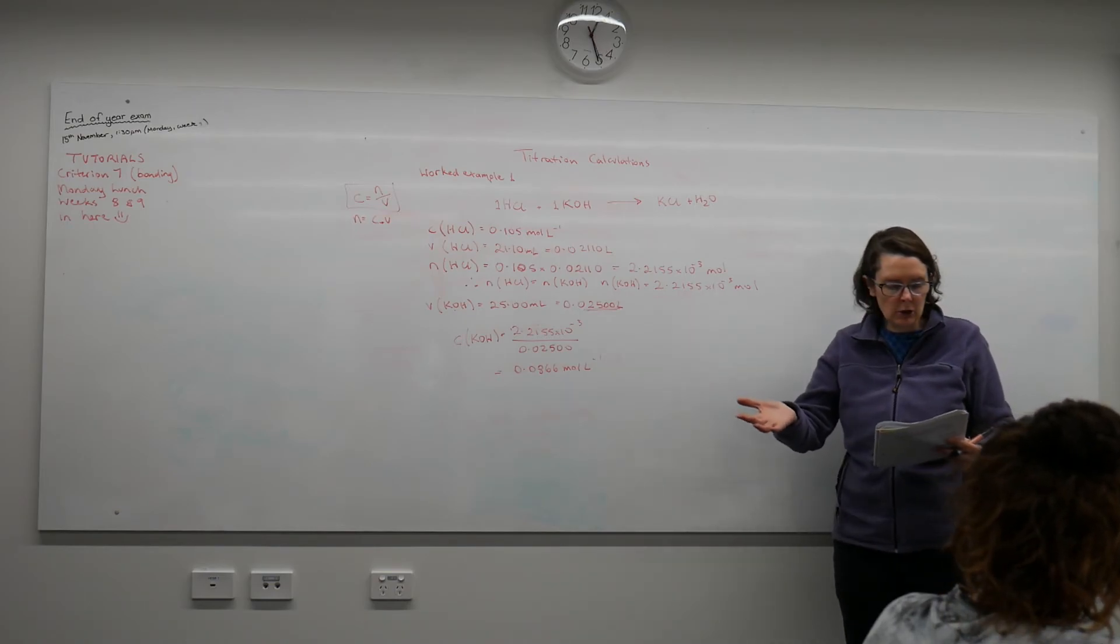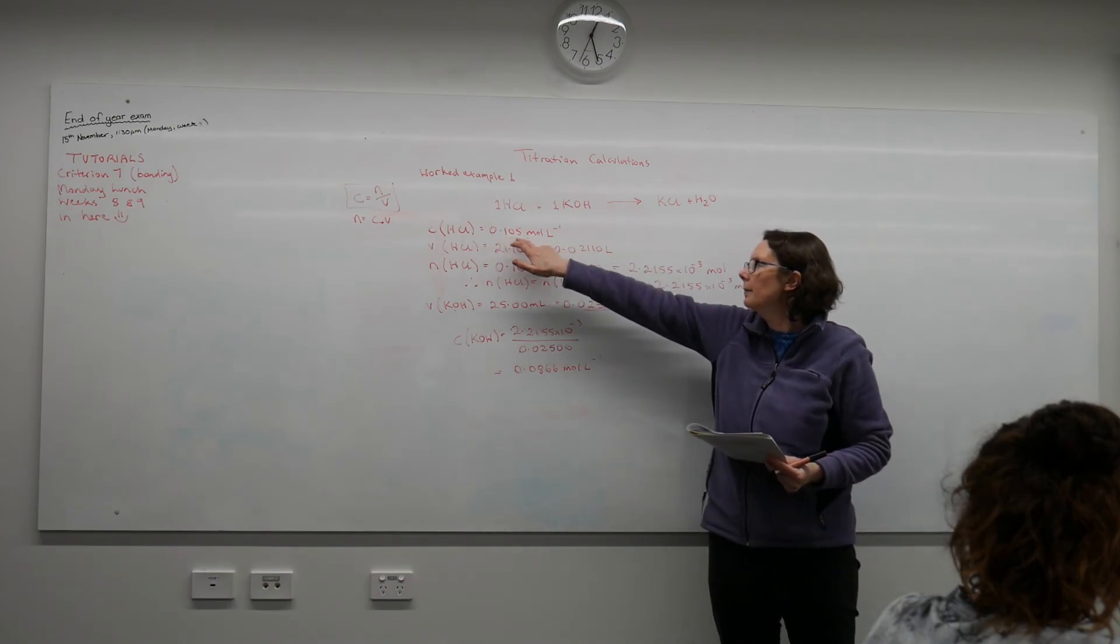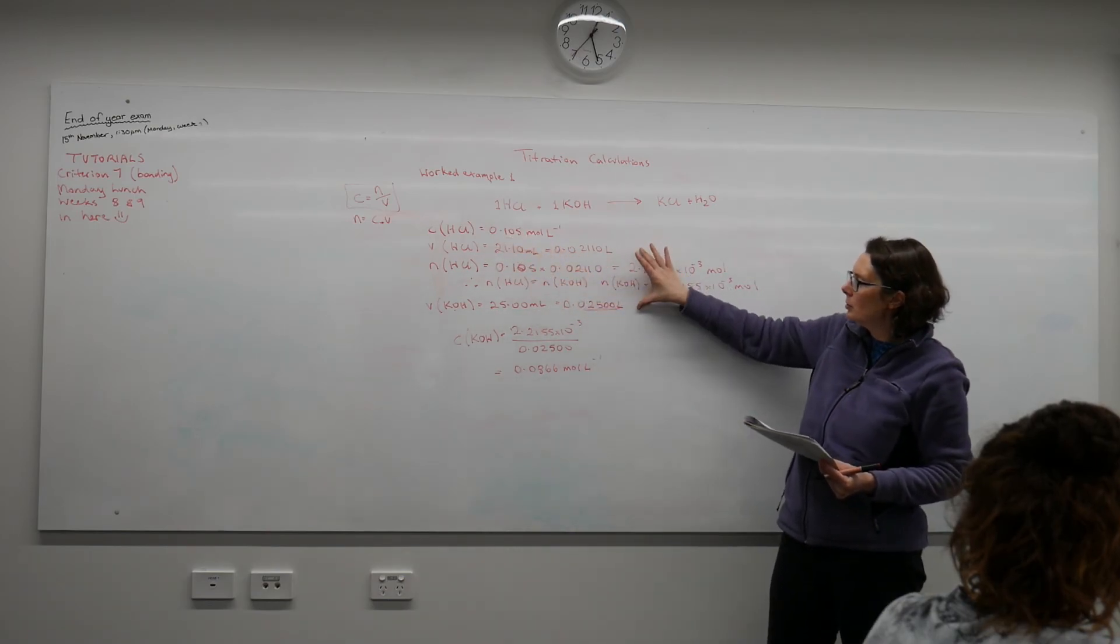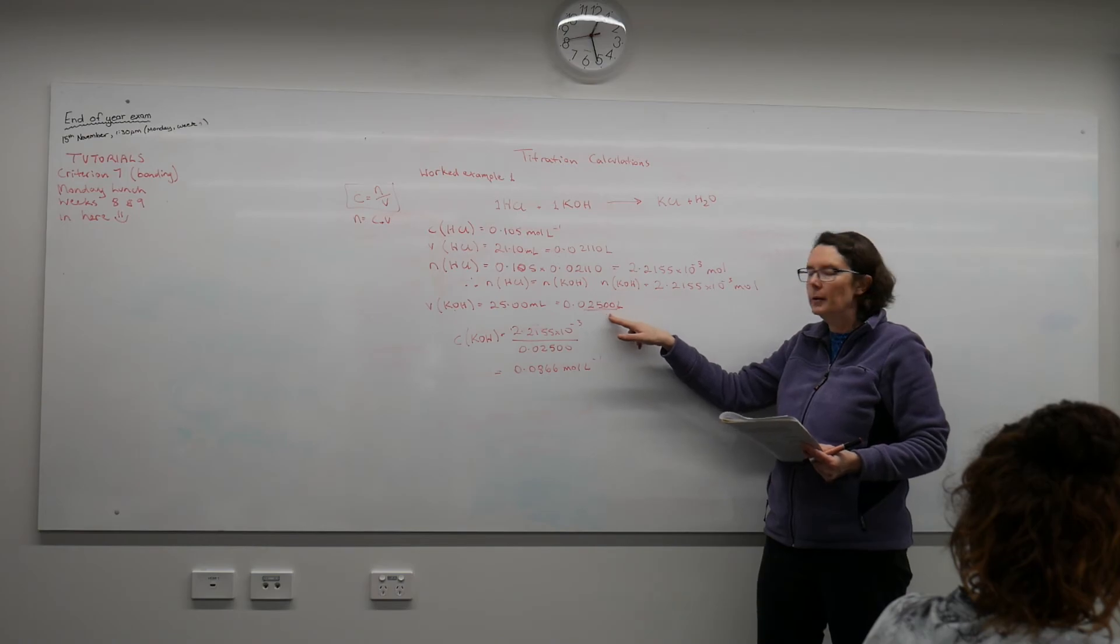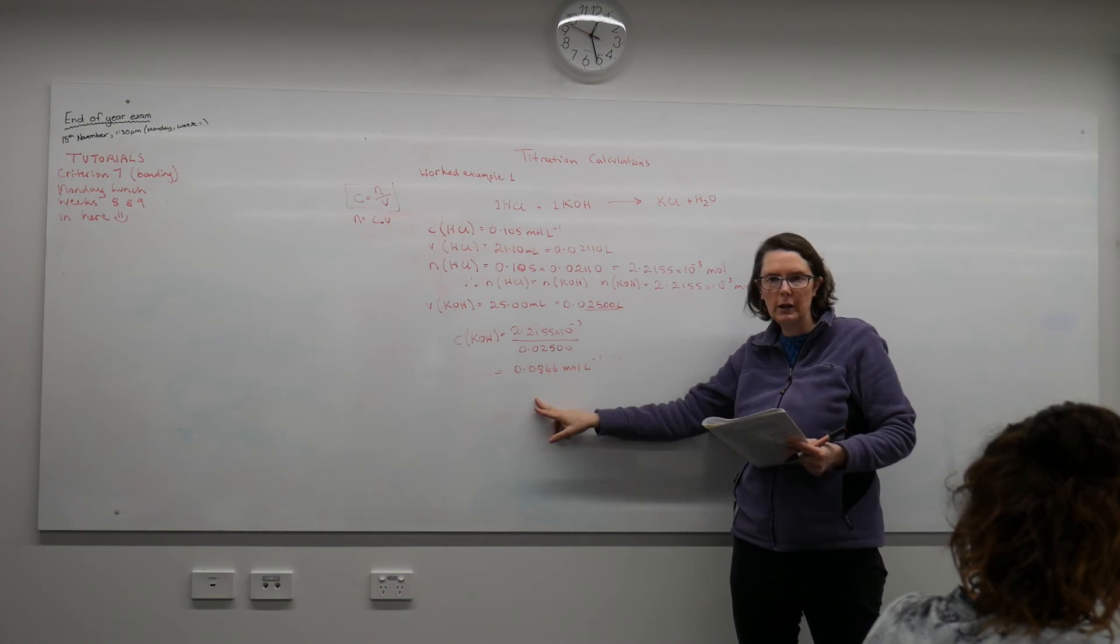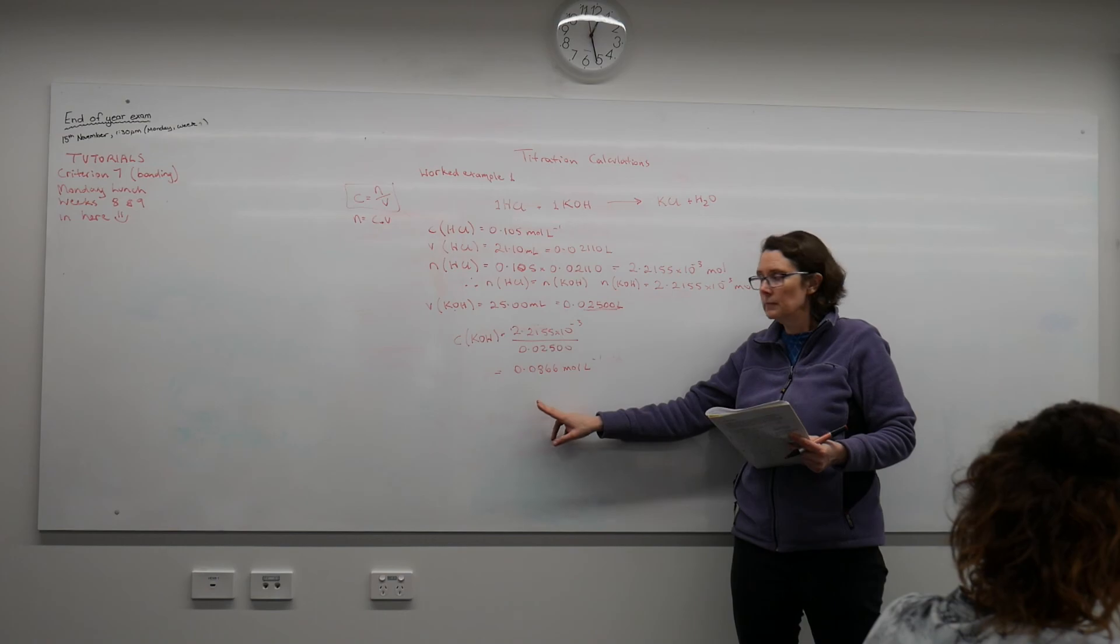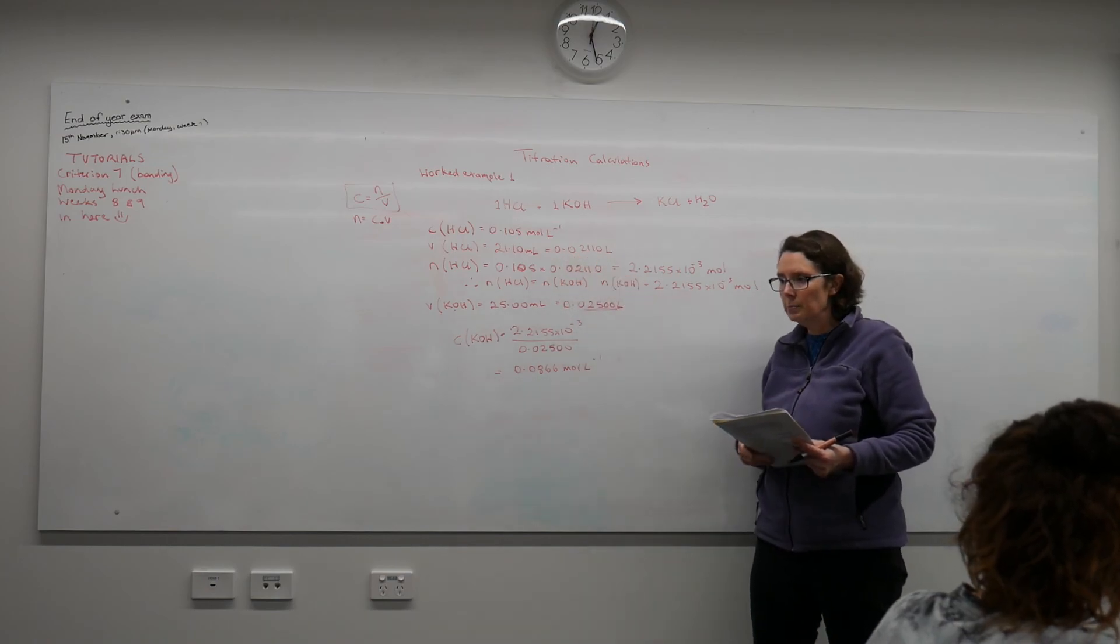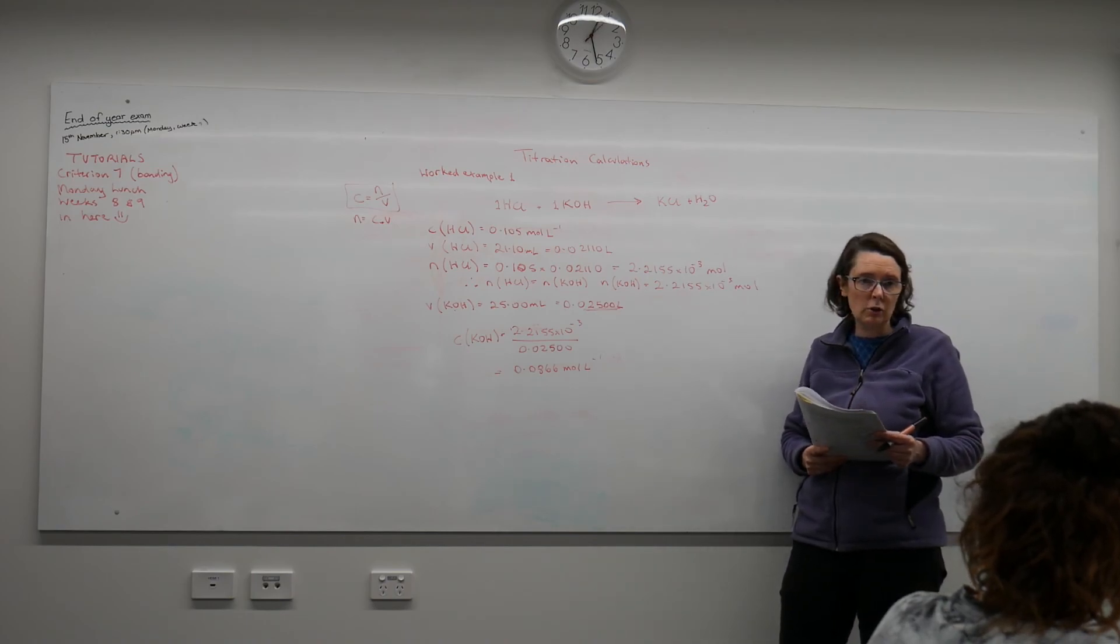I can also look back at the information given in the question. The hydrochloric acid solution concentration was around about 0.1. Now if I compare the volumes, I've got about 0.1 moles per litre, but I've got a bigger volume for the potassium hydroxide, so it makes sense that it's a lower concentration. Because the same number of moles of reactant were in a greater volume of water—25 mL being more than 21 mL. That we can just eyeball our calculation to check and make sure it makes sense.